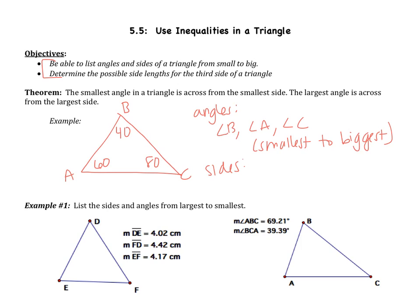If B is the smallest angle, the side across from it is going to be the smallest side, so AC would be the smallest side. Angle A is the medium angle, so BC is the medium side. Angle C is the largest, so AB is going to be the largest side. That's all this theorem says.